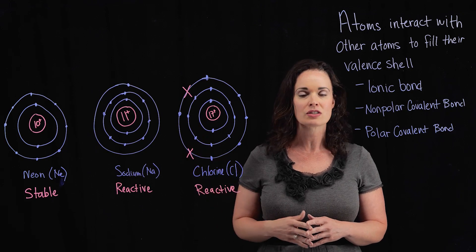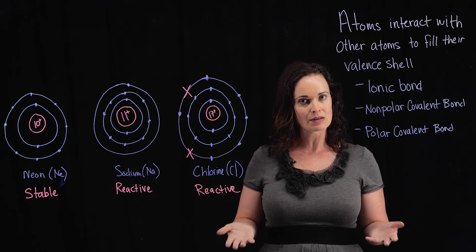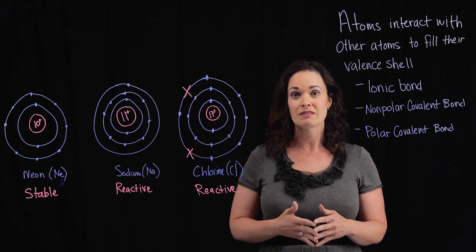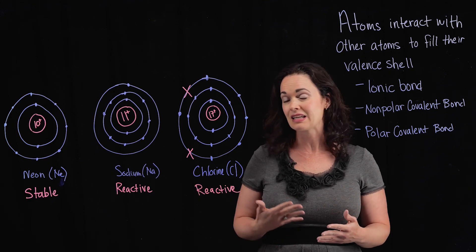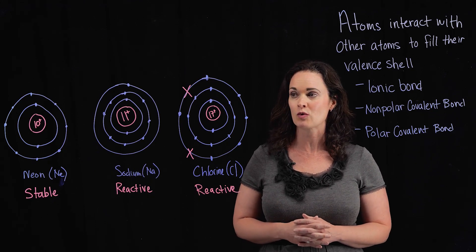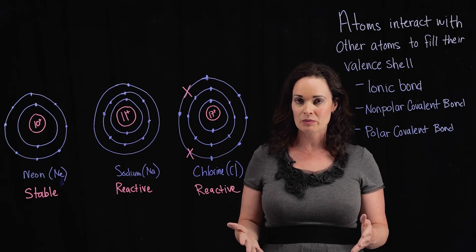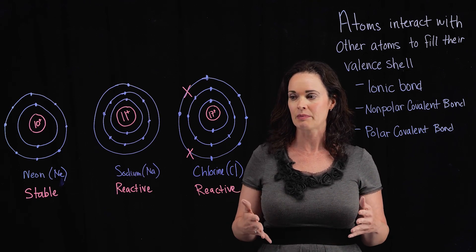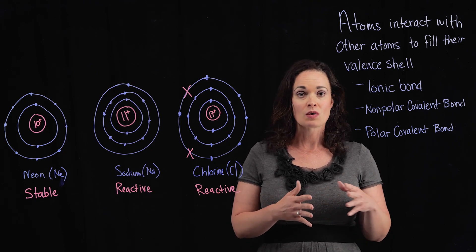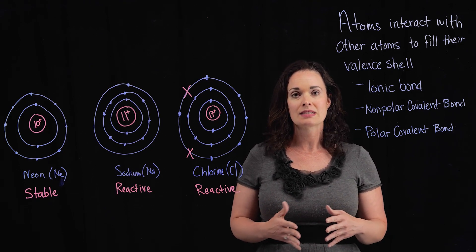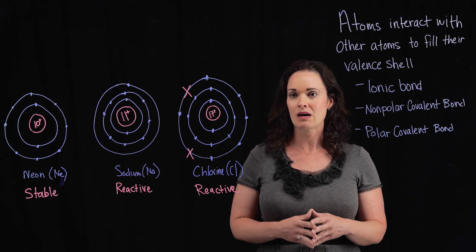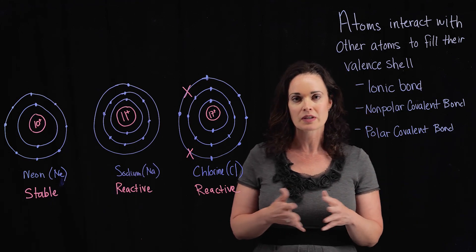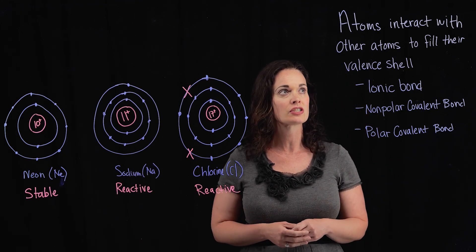If you look at chlorine, it has 17 protons and therefore 17 electrons assigned to their orbital shells. You'll notice its valence shell — its outermost shell — is missing a couple of electrons. If it could get a couple of extra electrons from somewhere, it would be in its most stable state. So next I want to talk about how these atoms actually go about filling up their valence shells.